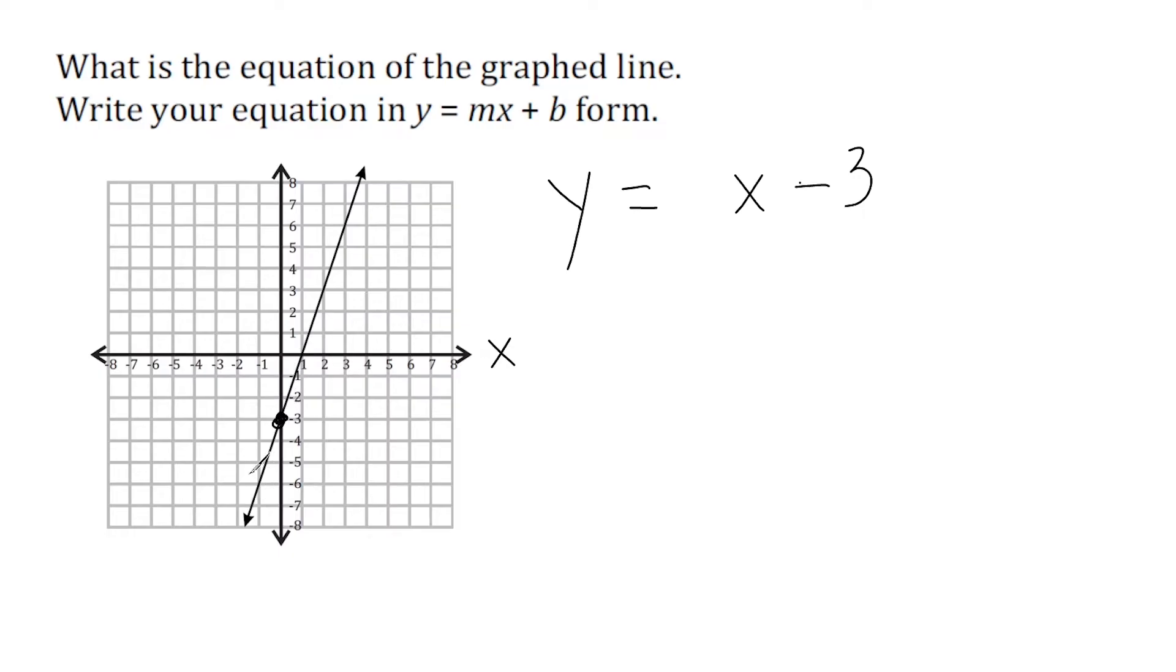Alright, so to find the slope, all you need to do is identify at least two points on the line. So like here's another point, another point, and another point. Now we just have to see what the rate of change is.